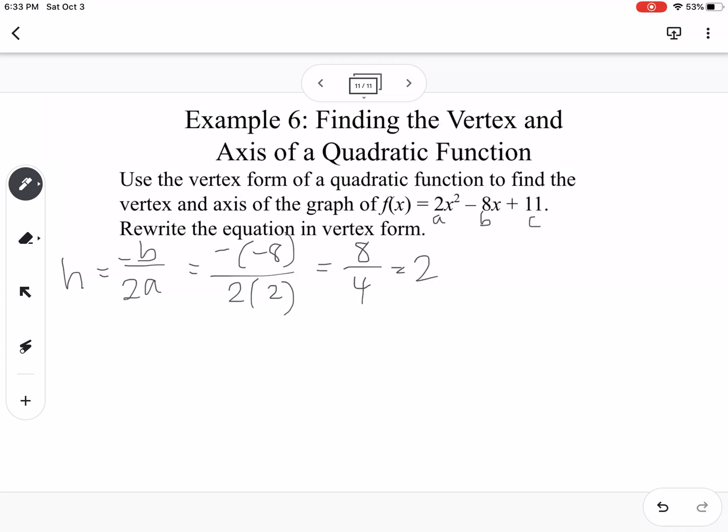So then once I have the h value, now I need to find the k value. So the k value is going to be when we take f of whatever h is, so that's 2. That would be 2 times 2² minus 8 times 2 plus 11. And when we do all of that, we get 3. So that means our vertex is at the point (2, 3).